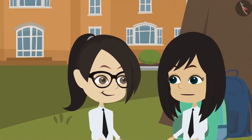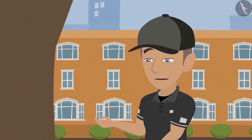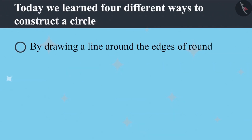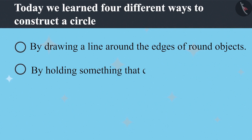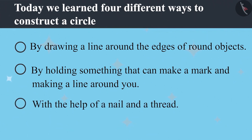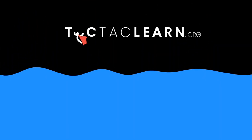Now we know four methods to draw a circle. First, by tracing the edge of round objects. Second, by holding something that can make a mark and making a line around you. Third, with the help of nail and thread. And fourth, by using a compass. Good, now go to your class.